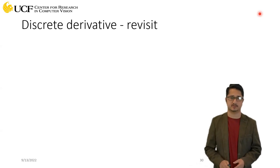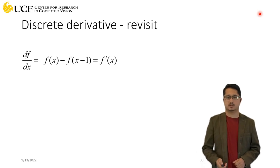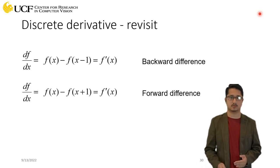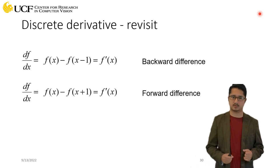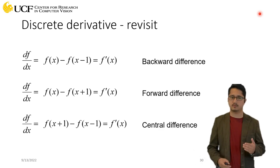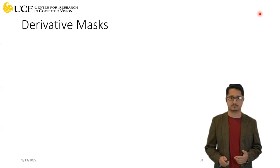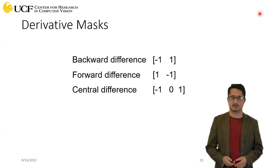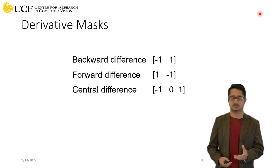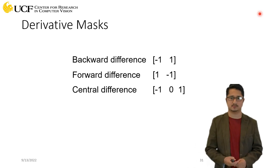Let's do a quick recap before going into the algorithm itself. We talked about how to convert continuous derivatives to discrete derivatives, covering three variations: backward difference, forward difference, and central difference. We also saw how to represent these as derivative masks — for backward difference we have [-1, 1], and similarly for forward and central difference. Applying these filters to an input image gives us the derivatives of that image.